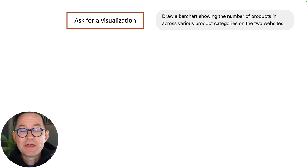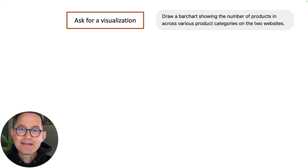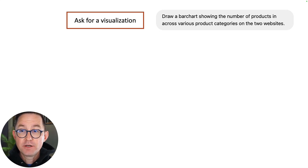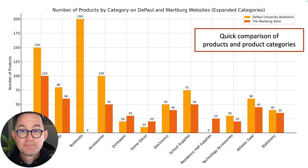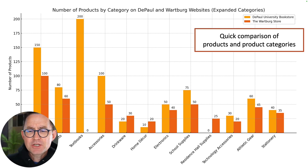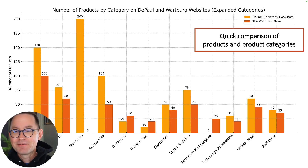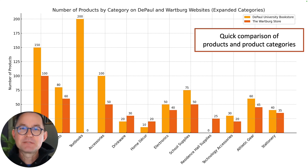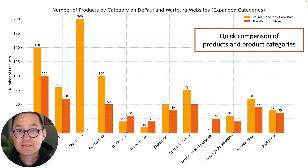We can show how we're more human and more connected to the student body, partnered with various college departments. And then we can ask it for a visualization. Because it has an index of all the URLs on both websites, I'm going to ask it to draw a bar chart showing the number of products across various product categories on the two websites — which it does beautifully. You can see quickly that brand has a big section on textbooks, while we have a section on residence hall supplies.